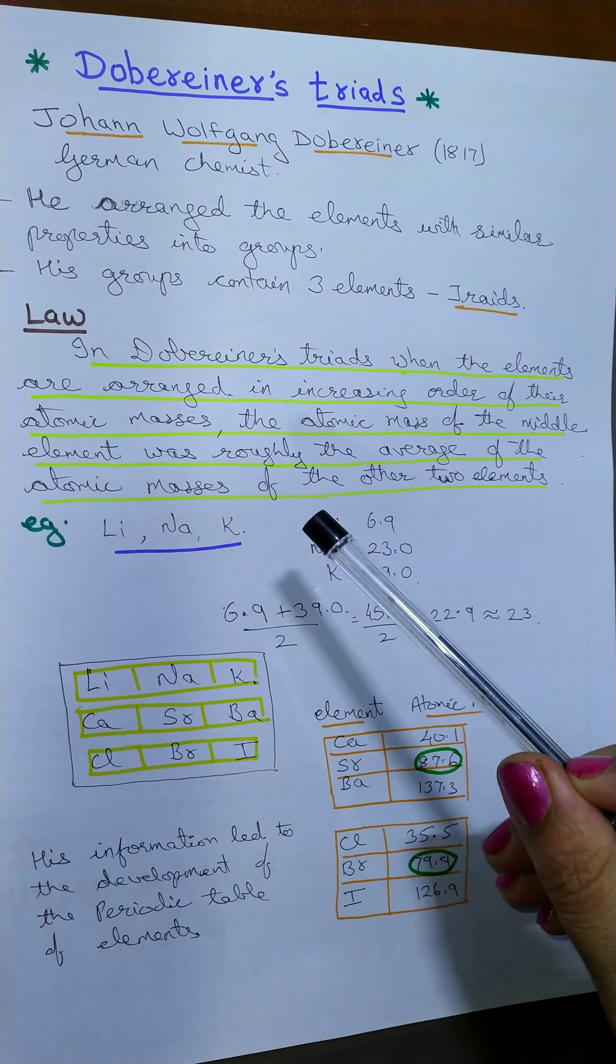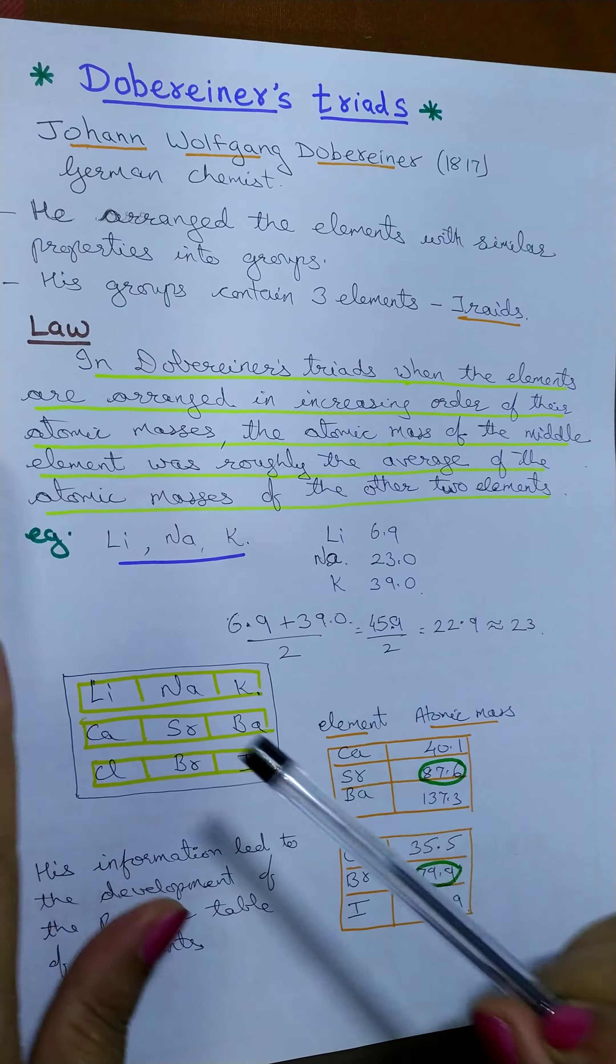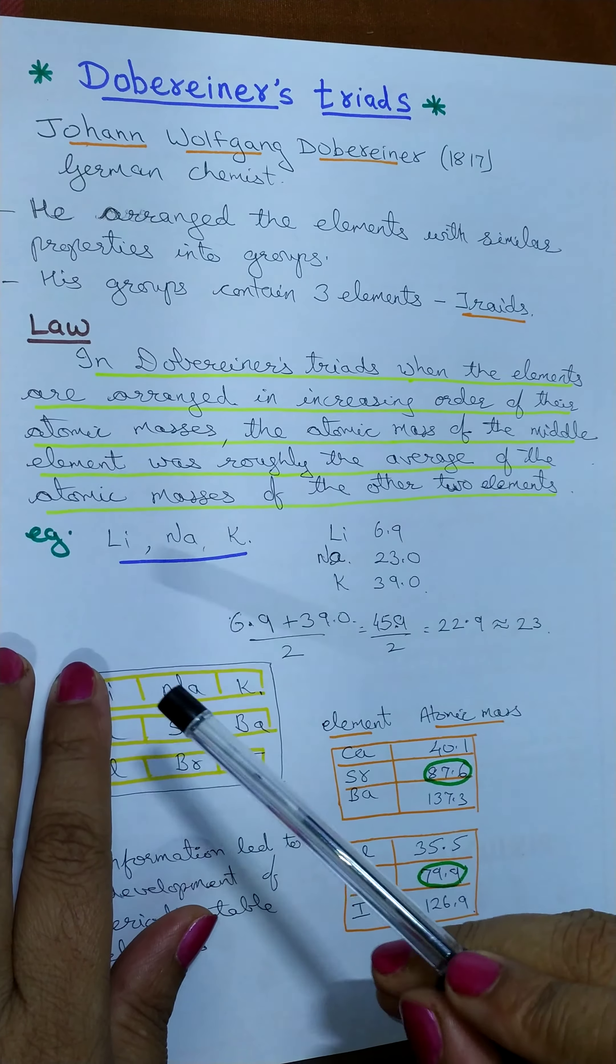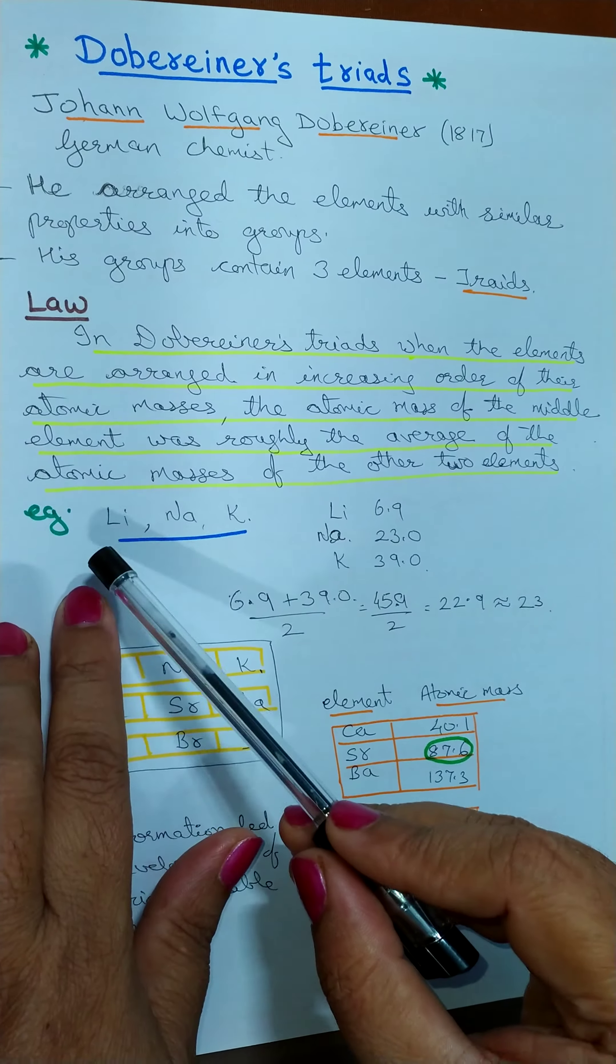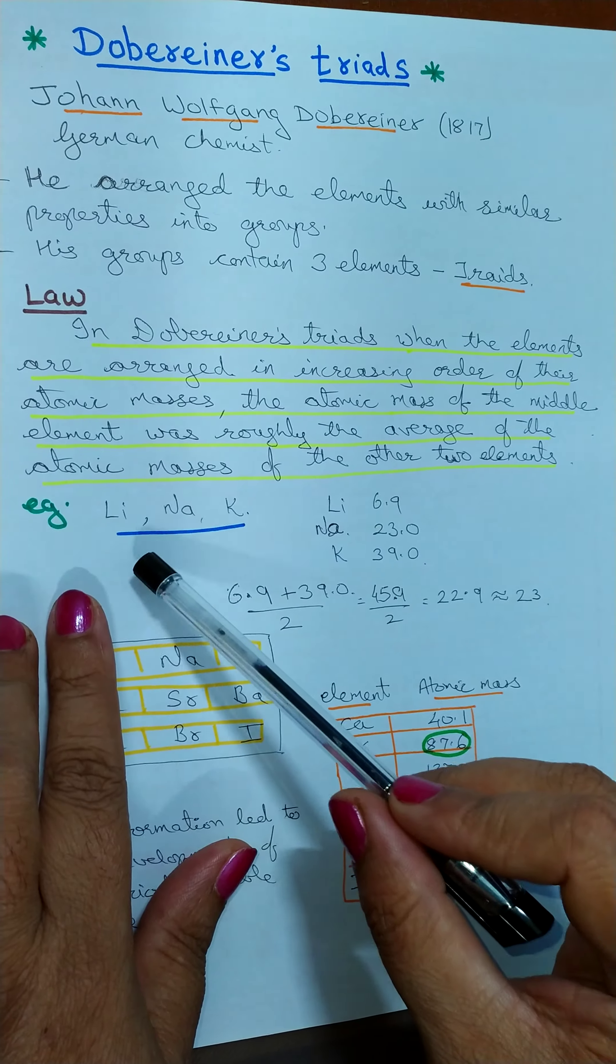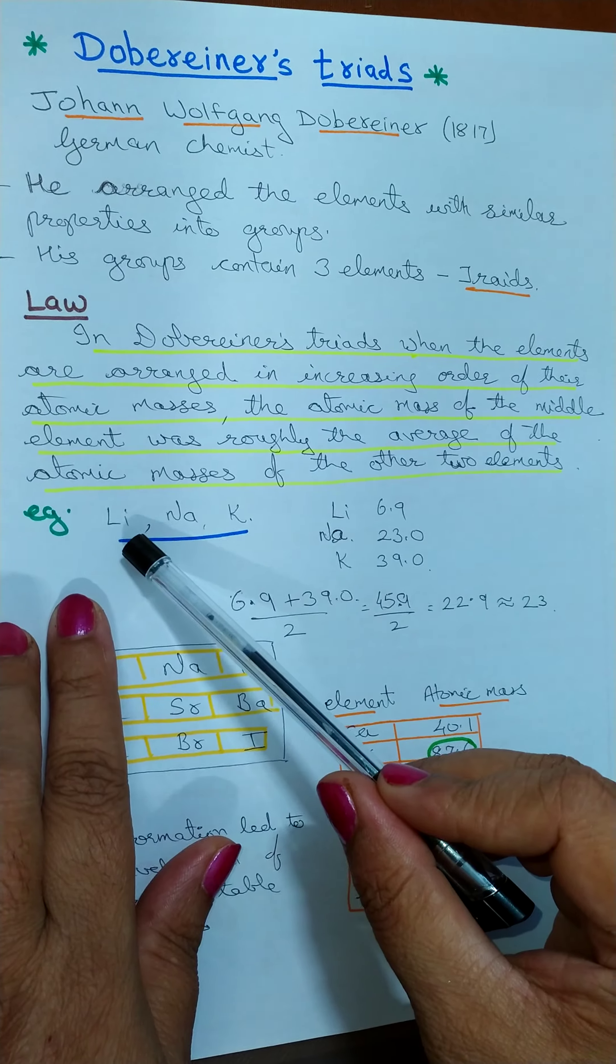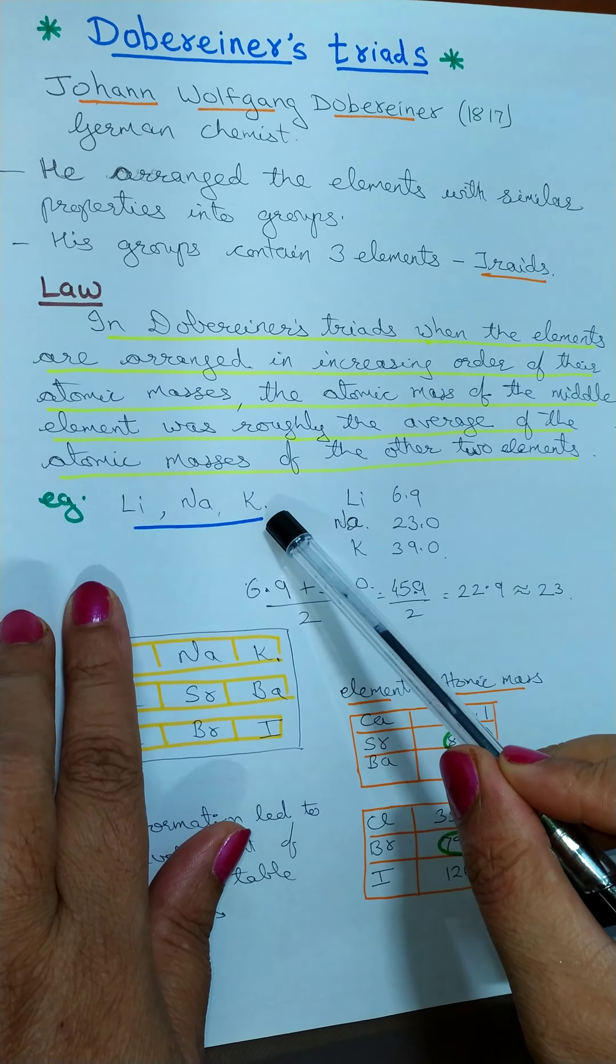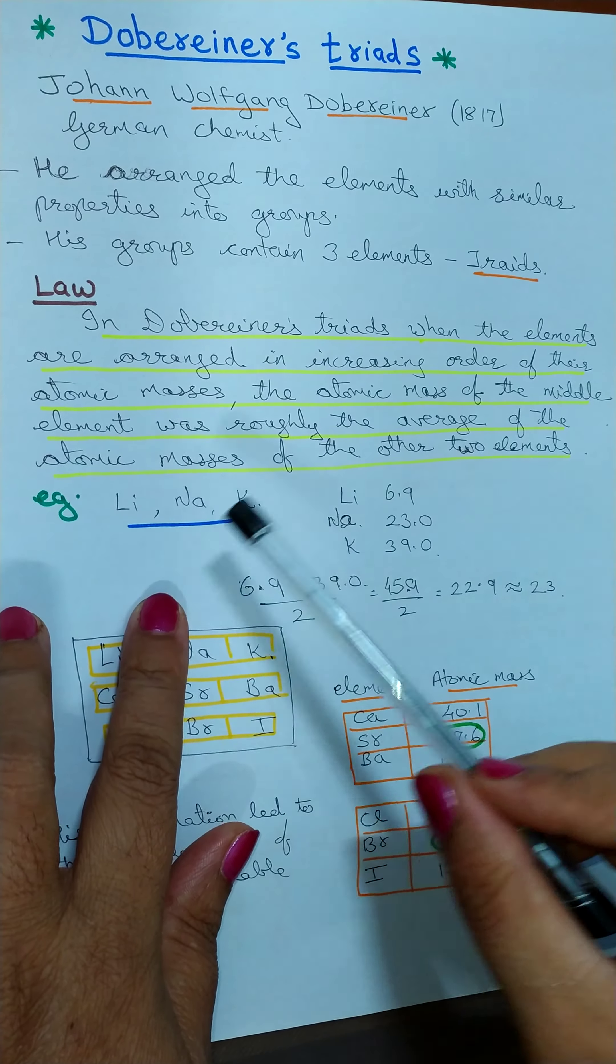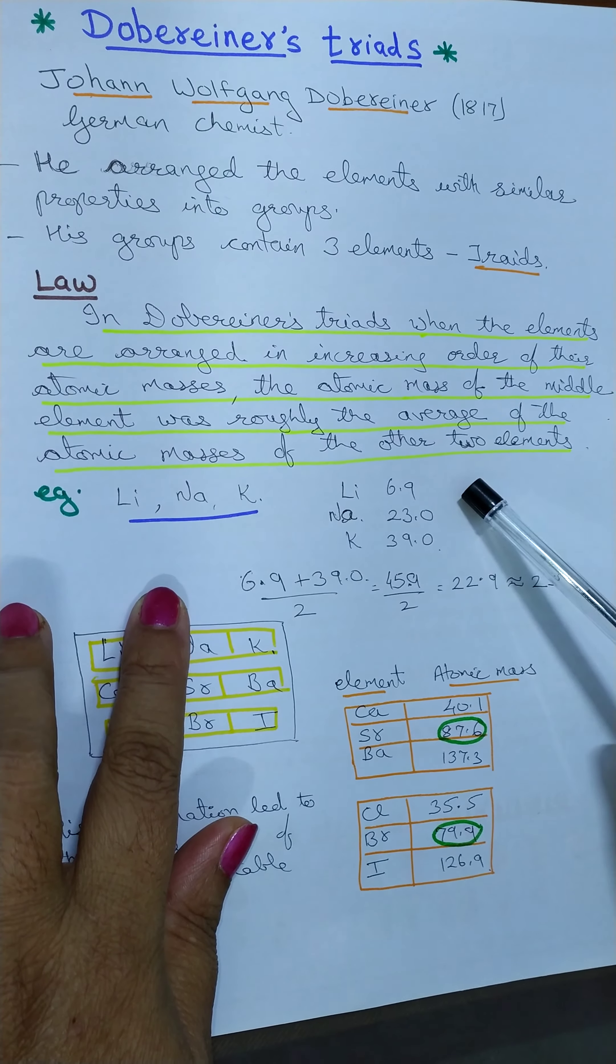In Dobereiner's triads, let us understand this with an example. We are taking the first example that is lithium, sodium and potassium. These are the three elements arranged in increasing order of their atomic masses. Let us see the atomic mass of lithium, that is 6.9.